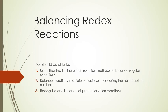Good evening. Tonight we're going to learn how to balance redox reactions using two different methods. By the time you are done with this PowerPoint, you should be able to use either the tie line, also called the oxidation number change method, or a half reaction method to balance regular equations. You should be able to balance reactions in acidic or basic solutions using the half reaction method, and you should be able to recognize and balance a special type of redox reaction called a disproportionation reaction.